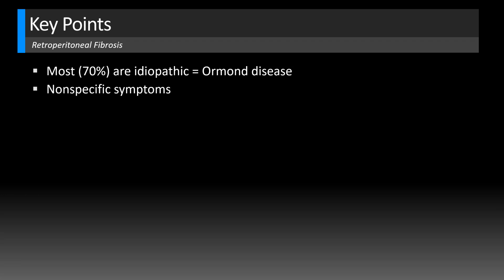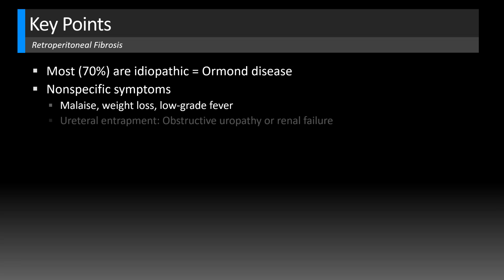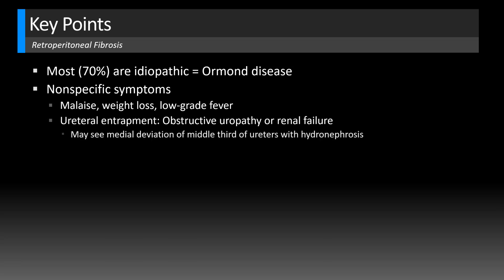The symptoms are also somewhat nonspecific — patients might just have malaise, weight loss, some low-grade fever. You see more significant symptoms if ureteral entrapment occurs, which can lead to obstructive uropathy and even renal failure. Classically, you'll see medial deviation of the middle third of the ureter causing hydronephrosis, which we do not have in this case. When venous entrapment progresses, that can lead to lower extremity edema, even pelvic and scrotal edema, and deep venous thrombosis can occur as well.